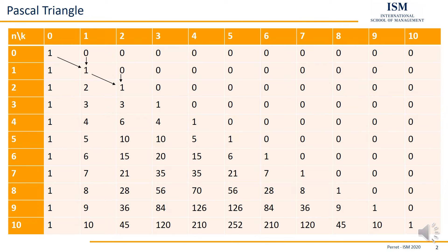That's a natural result, but all the other numbers also result from the same formula. For example, if I want to have the 3 here, the one above is the 1 and to the upper left we have 2 — so 2 plus 1 gives 3. Down below, the 6 is this 3 above plus the 3 to the upper left. And the 10 is here the 4 above and the 6 on the upper left. So that's relatively easy and straightforward.